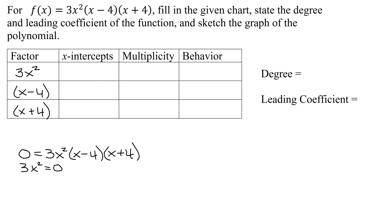So I get 3x squared equals 0. Divide both sides by 3. I get x squared equals 0 divided by 3, which is 0. So x equals plus or minus the square root of 0, which is just 0.